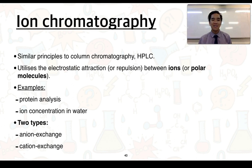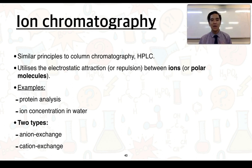Ion chromatography has very similar principles to column chromatography, to HPLC, to gas chromatography. In this case, it utilises the electrostatic attraction or repulsion between ions or potentially polar molecules.